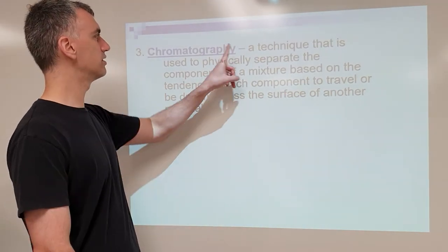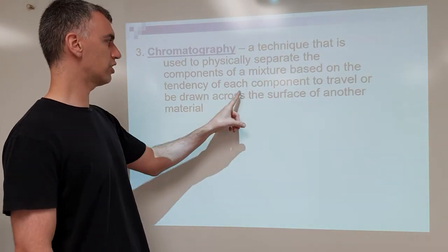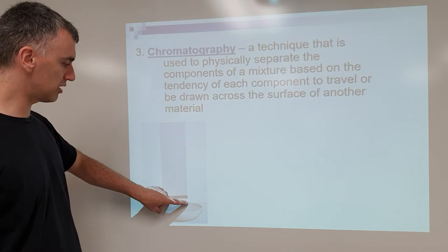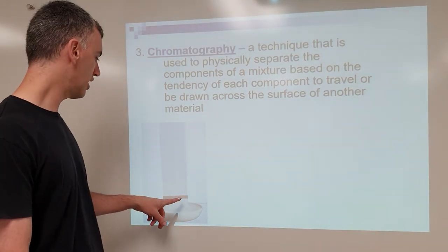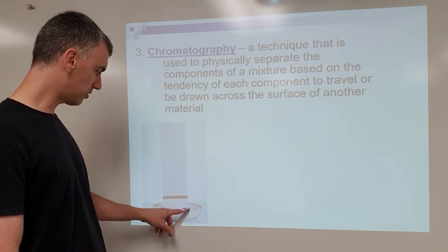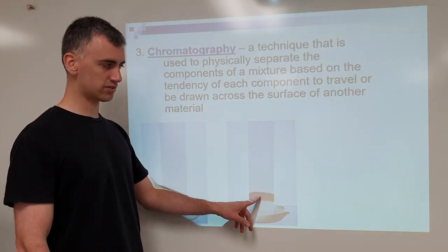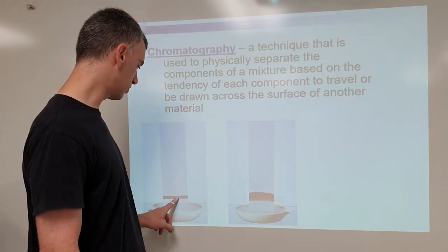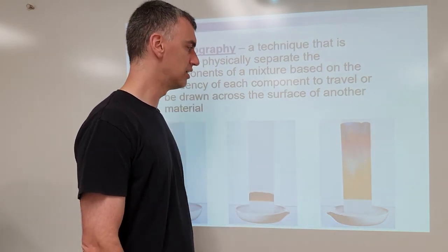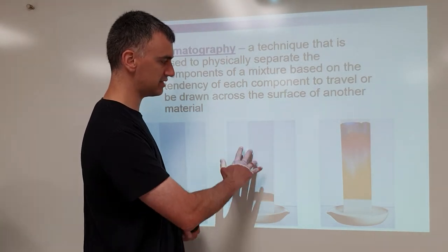Chromatography is another technique used to physically separate the components of a mixture based on the tendency of each component to travel or be drawn across the surface of another material. You take a special surface like chromatography paper and a substance that's a mixture — for example, ink. As the alcohol or solvent soaks upward, it carries the ink with it, but bigger molecules don't travel as far as smaller molecules, so it separates them out. What looks like just black ink gets separated into the colors it actually contains — blue, red, and yellow.